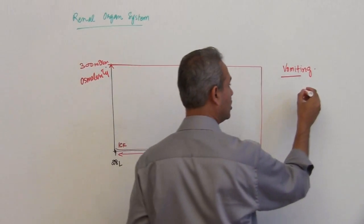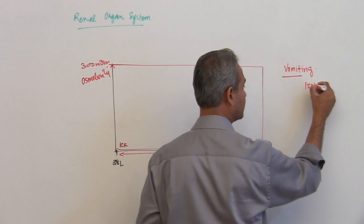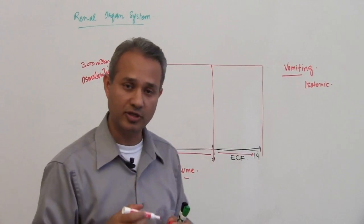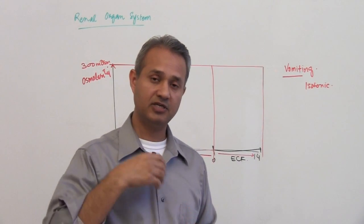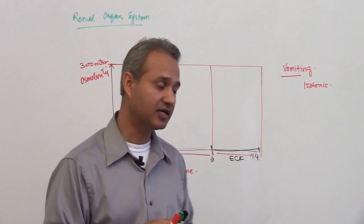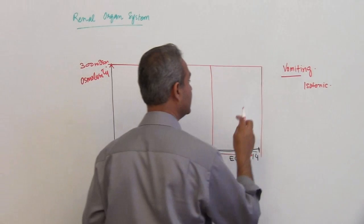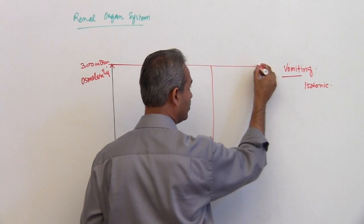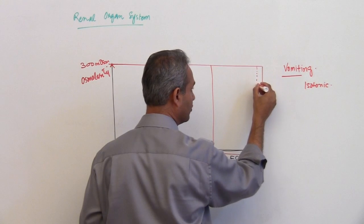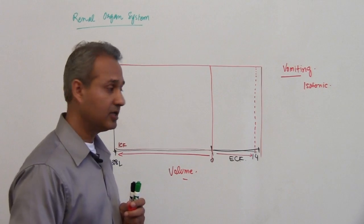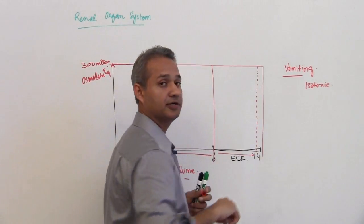So vomiting is normally isotonic, vomiting is normally isotonic. So what would happen is that the patient or the person has vomited some fluids from inside the gut. What would that mean? That would mean again from the ECF some fluid has been removed. The fluid is isotonic.